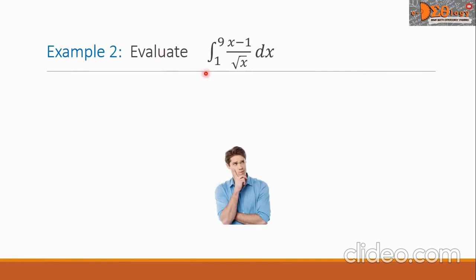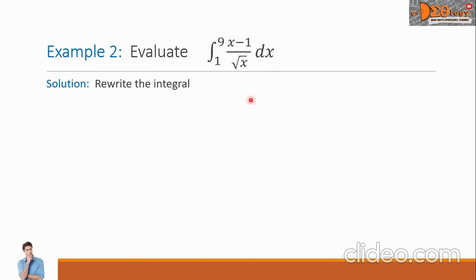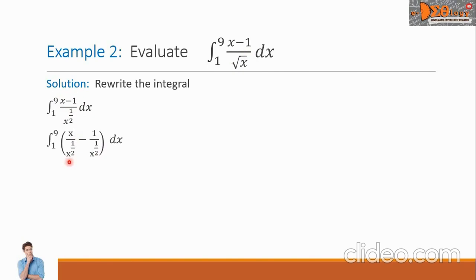Example two: evaluate the integral from one to nine of the function x minus one all over the square root of x, dx. For our solution, let us rewrite the integral and show that the radical sign is a fractional exponent. So we have the integral from one to nine of x minus one all over x raised to one half. Distributing the denominator to each term of the numerator gives x over x to the one half, minus one over x to the one half, which simplifies to x raised to one half minus x raised to negative one half.